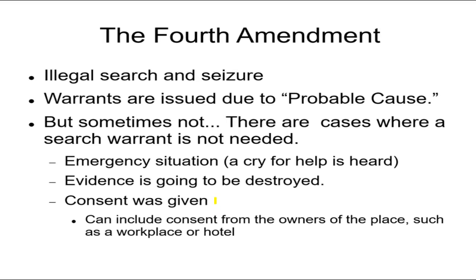Consent can also be given — if the person says okay, go ahead and search my place, you can search it. And it is not just the person living there at the time. For example, in an apartment where the owner reserved the right to enter, the owner can say they want the police to search that place — just as the owner is allowed to go inside, they can allow the police to go in. That is another situation where it is possible to enter without a warrant, but they must always justify what they searched for and how.